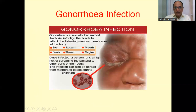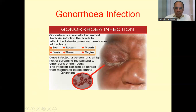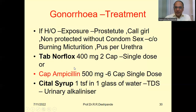Gonorrhea is a sexually transmitted bacterial infection that tends to attack the mucous membranes of the body. It can attack the eye — you can see the discharge here. It can affect the rectum, mouth, penis, throat, and vagina. Once infected, a person runs a high risk of spreading the bacteria to other parts of the body. The infection can also be spread from mothers to babies during childbirth.